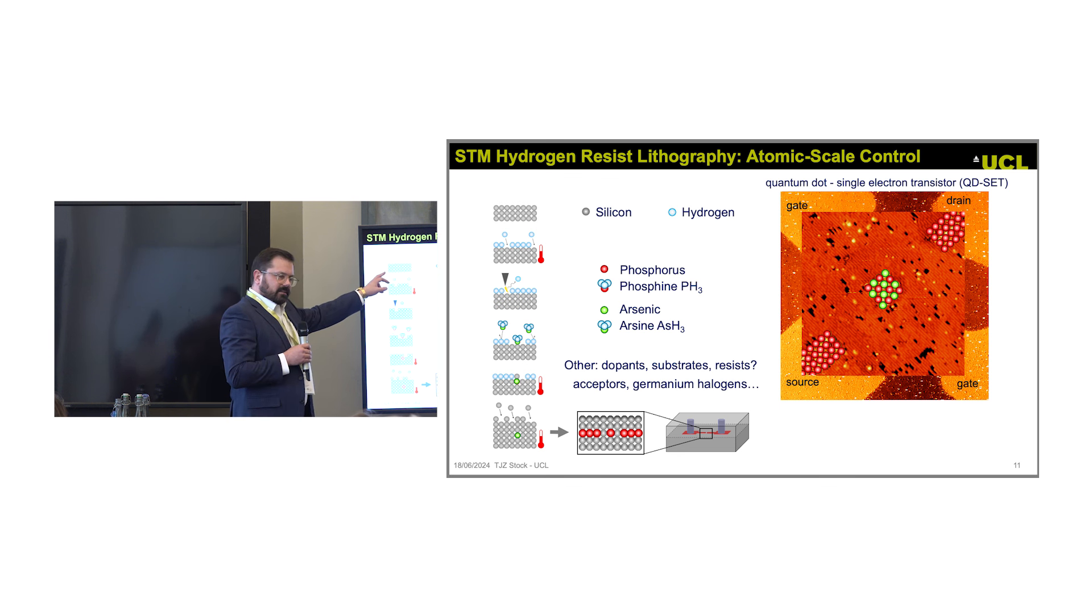Here's the technique to do the patterning. Start with atomically clean silicon, put a layer of hydrogen on the surface, use your tip to remove the hydrogen. Now we expose it to a particular precursor, phosphine, which absorbs, dissociates, and then your atom incorporates into the top layer. Now you carefully overgrow this with epitaxial silicon. Your silicon's trapped, your perfect atomic scale pattern's trapped in your silicon. You can take it out of the UHV and it will be stable forever.